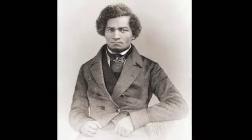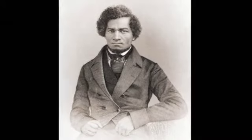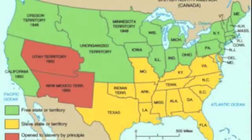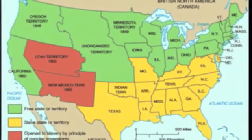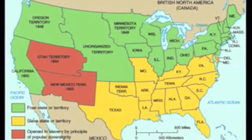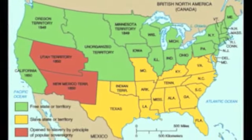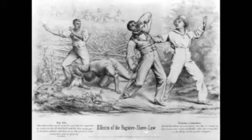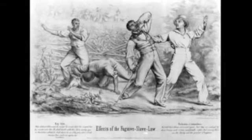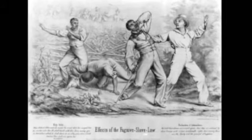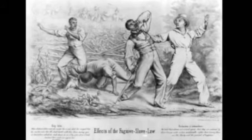People like Frederick Douglass, who are runaway slaves, had gotten into the North and were flaunting their status. So as part of the Compromise of 1850, the Southerners were given this new Fugitive Slave Act, and it's a much stronger act.